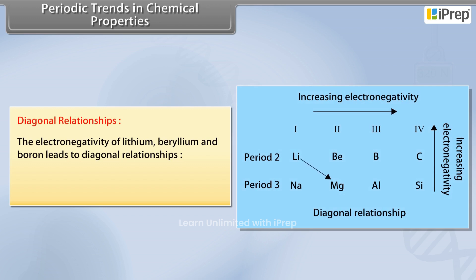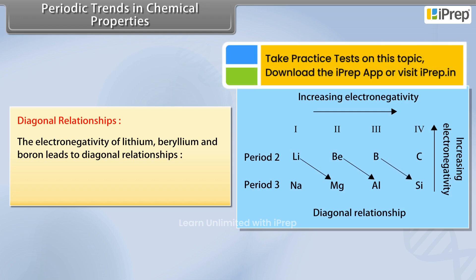Lithium is strikingly similar to magnesium, beryllium to aluminum and boron to silicon.